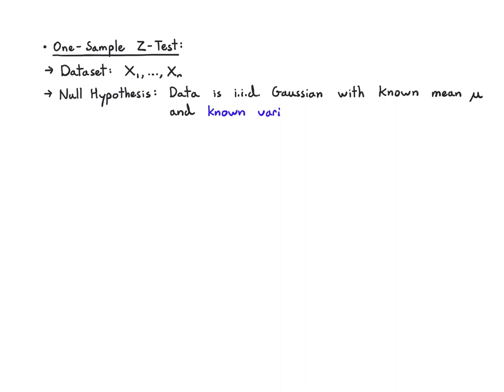A one-sample z-test is when we are given a dataset. We'll say it has n points x1 up to xn. The null hypothesis in this case is that the data is IID Gaussian or well modeled by that with known mean and known variance. Our question informally is, does the mean of the data that we've gathered differ significantly from the baseline that we know mu?